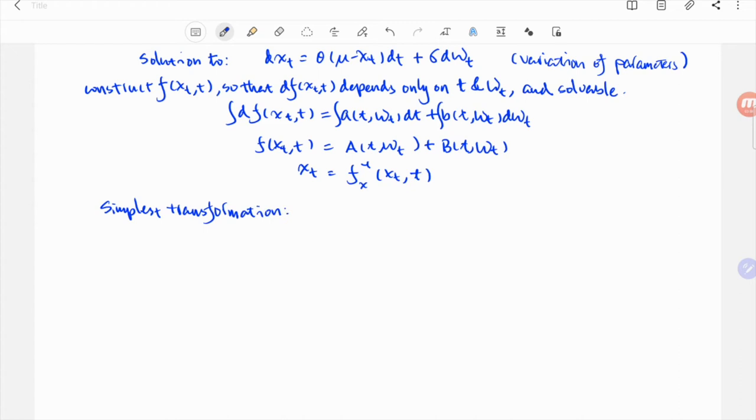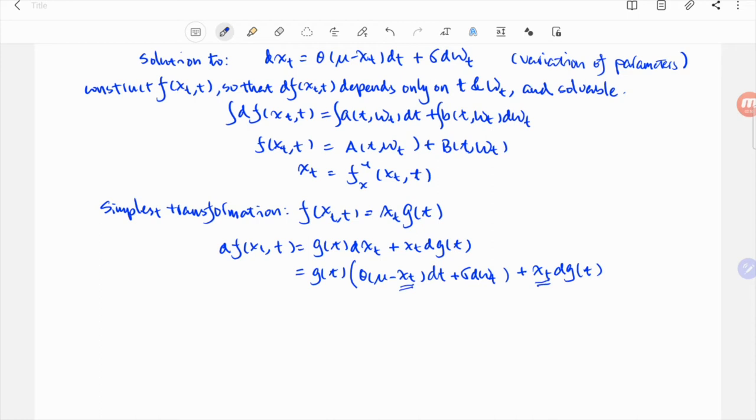The simplest transformation is just to multiply x by a function g_t that depends only on t. Differentiate it into dx and dt, and plug in dx with the original SDE we want to solve. We notice x shows up in these two terms. So if we group these two terms together and make them offset each other, we will be left with dependency only on t and w.